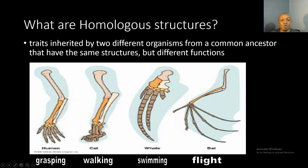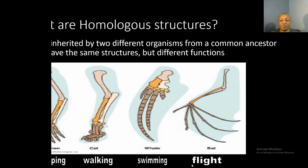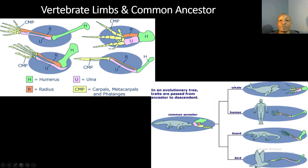If you look at the examples: a human's arm is meant for grasping, a cat's legs are meant for walking, a whale's fins are meant for swimming, and a bat's arms are meant for flying. Notice that these structures are similar but they have different functions. Now let's take a look at vertebrate limbs and their common ancestor.